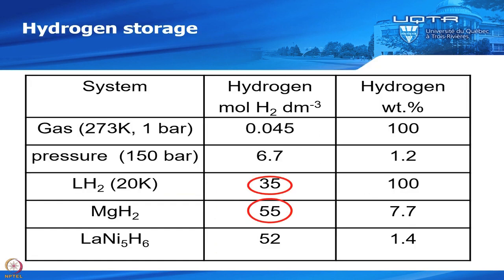To give you some idea of the difference with metal hydride with respect to other ways to store hydrogen: if you store hydrogen in gaseous form at one bar at room temperature, the volumetric capacity is quite low. To increase that you have to increase the pressure — at 150 bar you have a much better volumetric capacity. If you are using liquid hydrogen, usually at 20 K, the volumetric capacity is quite good.